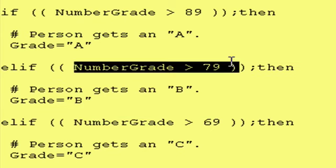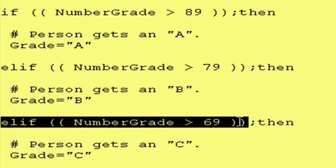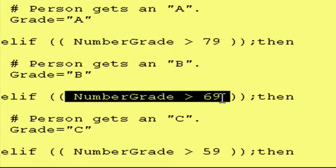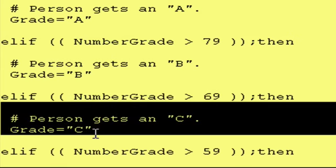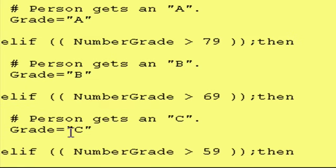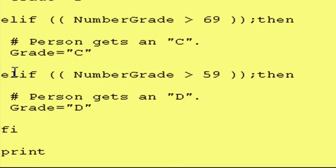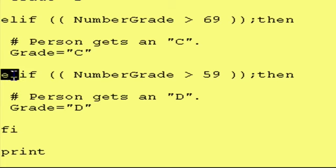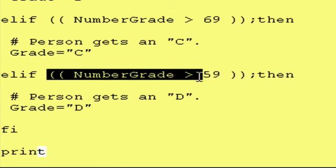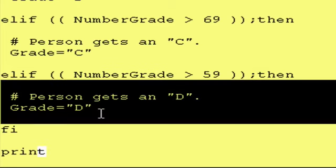However, if this test is not true, then go down to this line right here and test this parameter out. If this comes out true, then assign the value of C to grade. However, if it's not true, then go to this else if statement and test this out. And if it is true, assign the value of D.